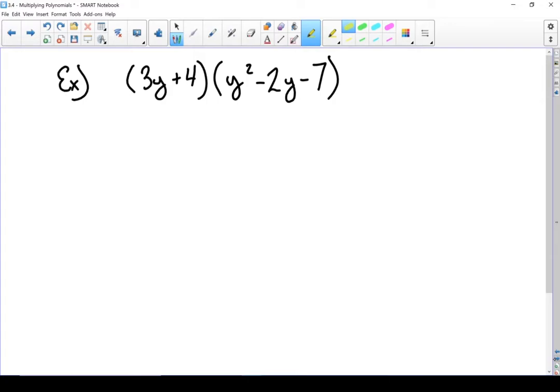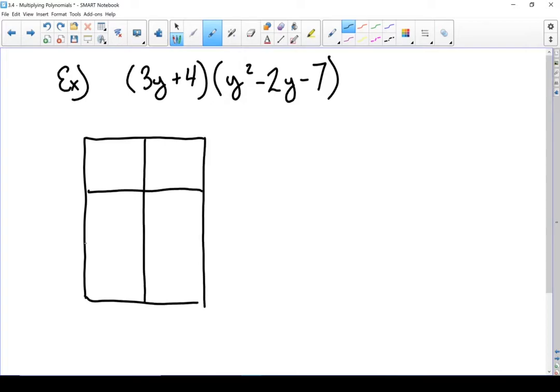This method also works if you have any other types of polynomials. You just change your box. In this case, I've got a binomial, because it's got two terms, and a trinomial. I'm just going to make my box 2x3 or 3x2. It doesn't matter which order you do it in. Let's put our polynomials in. I'm going to put my 3y plus 4 across the top. I'm going to put my y squared minus 2y minus 7 along the side.